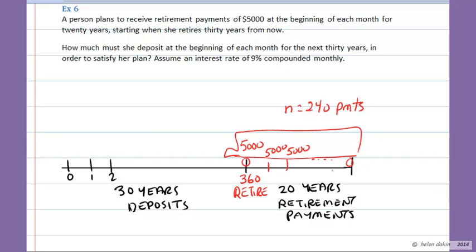How is she going to be able to make those withdrawals or retirement payments? She needs to save that money up and she's going to do that by depositing some money at the beginning of every month for the next 30 years. So she's going to be saving up for 30 years, depositing a certain amount of money starting with today. Depositing R dollars today, R dollars at the beginning of the second month, at the beginning of the third month.